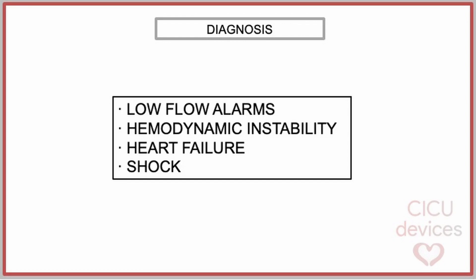Significant clinical manifestations of extrinsic obstruction may include constriction of the outflow graft leading to persistent low-flow alarms or low flow. Persistent low-flow, if not treated, may result in hemodynamic compromise, the need for surgical intervention including possible pump replacement, and risk of death.